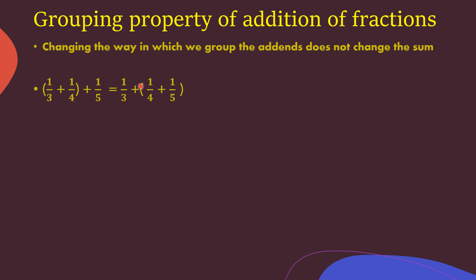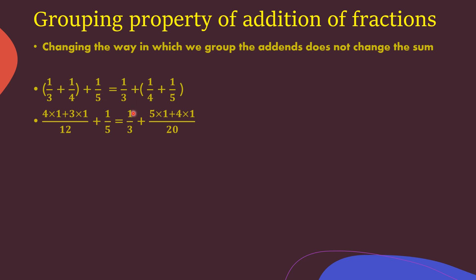We will solve both parts. For the left side, first add 1/3 plus 1/4. Since the denominators are different, find the LCM of 3 and 4, which is 12. So it becomes 4 times 1 plus 3 times 1, all over 12, plus 1/5. For the right side, add 1/4 plus 1/5. The LCM of 4 and 5 is 20, giving 5 times 1 plus 4 times 1, all over 20.